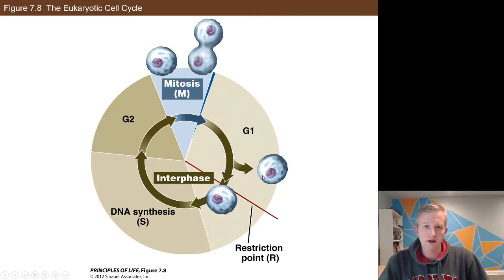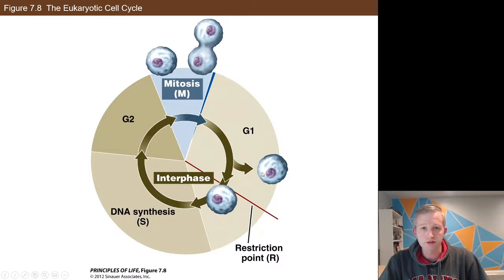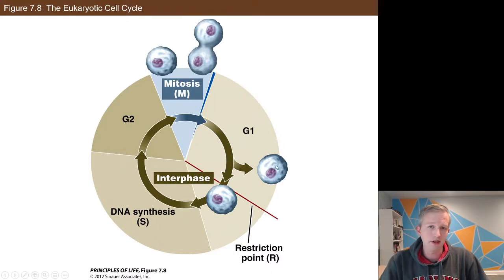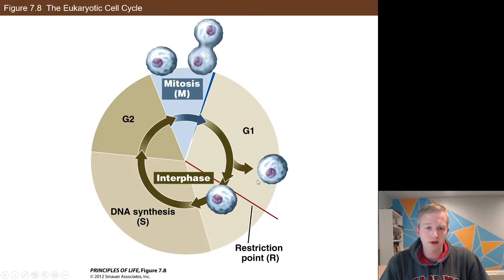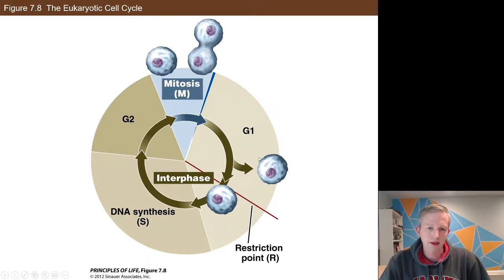Sometimes cell types hit G0 and they never go back into the cycle — they are what they are and they're not going to divide. Different types of cells in our nervous system do this. But then there are other examples like liver cells that might hang out in a G0 state for about a year at a time, then reproduce once a year. It's nice to see it as a little offshoot in the diagram, but just understand it as hitting pause on the process of division for whatever length of time it happens to be.